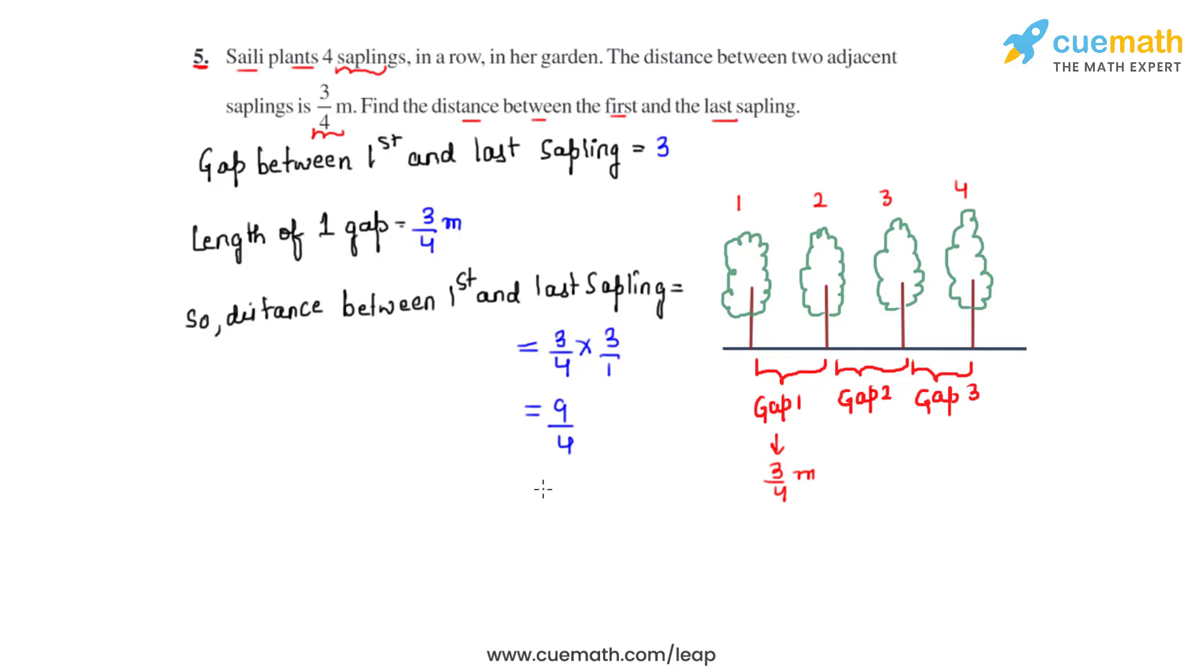Now as this is an improper fraction we'll convert this into a mixed fraction. Dividing 9 by 4 gives us the quotient as 2 and remainder as 1. So 2 and 1 fourth meters is the total distance that we have between the very first sapling and the last sapling.